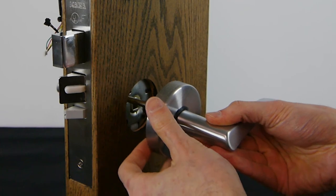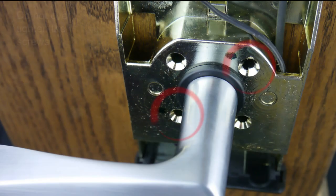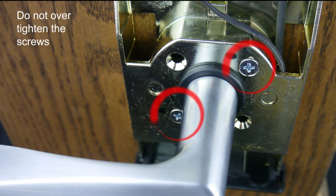Align the outside lever trim with the diagonal holes on the mortise hub and secure it with two screws. Do not over tighten the screws.